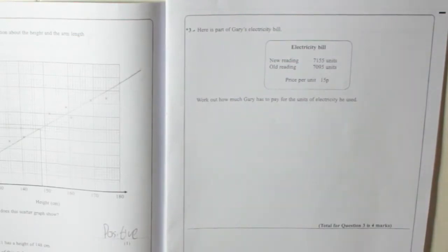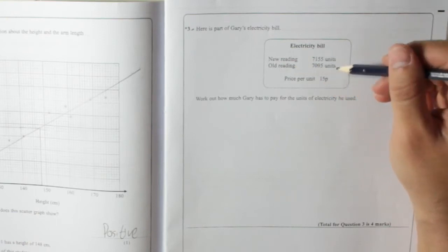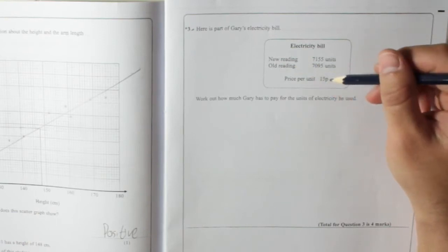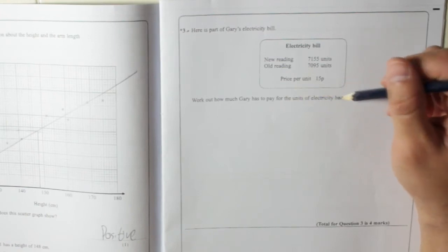Question 3. Here is part of Gary's electricity bill. Electricity bill: New reading 7155 units, old reading 7095 units, price per unit 15p. Work out how much Gary has to pay for the units of electricity he used.